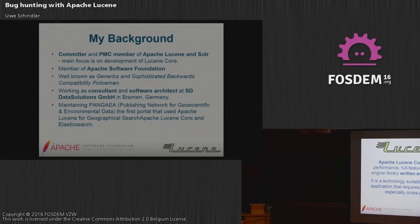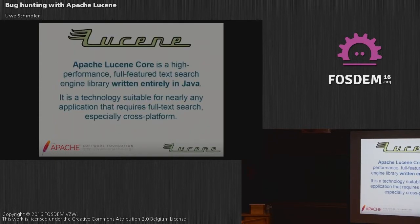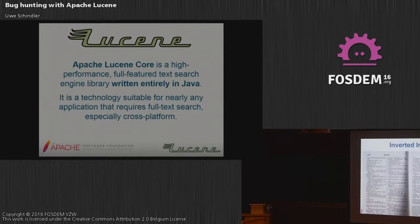So, what's Lucene about? This dev room is about Java, so maybe not everybody knows Lucene. Apache Lucene core is a high-performance, full-featured text search engine completely written in Java from the beginning. It started in about 1998, and it was really innovative at that time to do a full-text search engine completely in Java.